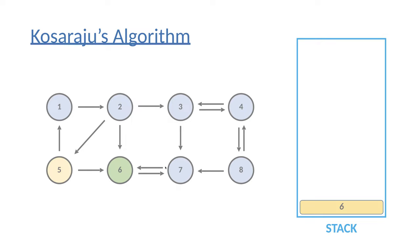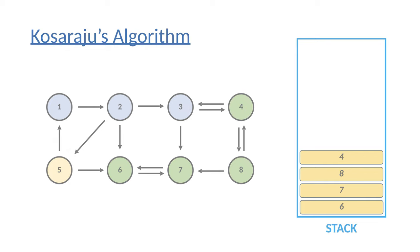Whenever we visit a given vertex — meaning we have considered it along with all of its children — we push it onto the stack. This is exactly what we do when dealing with topological ordering. We backtrack to vertex seven; all its children have been considered, so we push it. Then we backtrack to vertex eight — all children considered, push it. We backtrack to vertex four — vertex three and vertex eight are already visited — so we push vertex four, then vertex three.